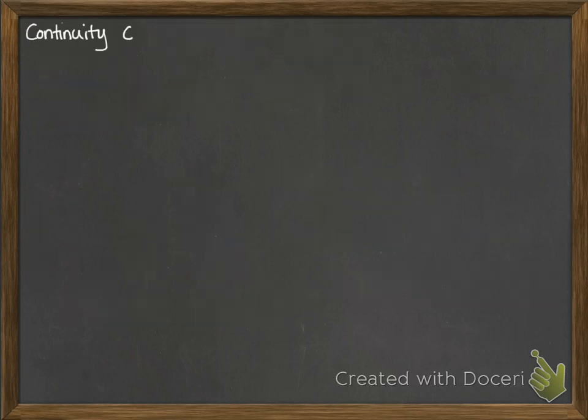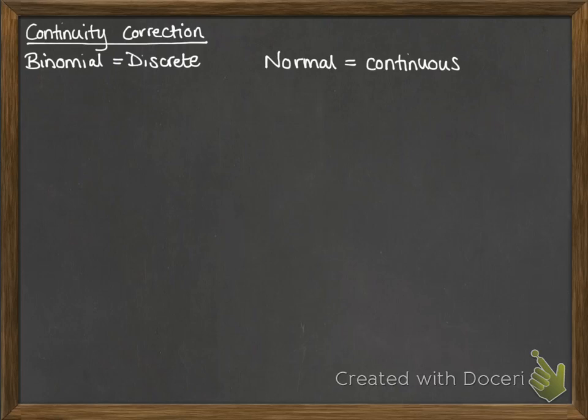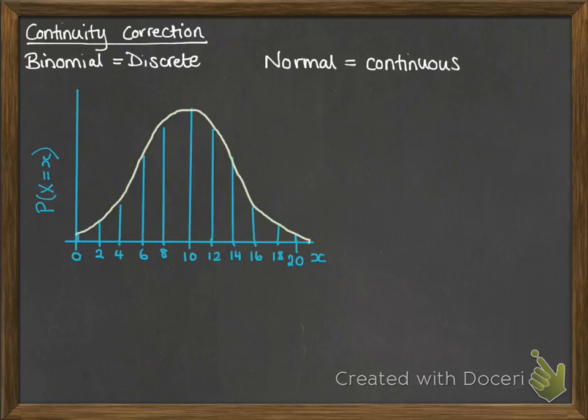Right, so then we also need to consider something called the continuity correction, and the reason for that is because the binomial distribution is discrete but the normal is continuous, so they're not quite the same kind of distribution. Discrete is only dealing in whole numbers but normal could be anything in between those whole numbers as well. So if we think about that graph again, if we were doing something like the probability that x is less than 12 as a binomial calculation, then we would just look up the 12 there for binomial. But if we're changing this into the normal distribution we need to think about all of the numbers that would round to the thing that we're thinking about.